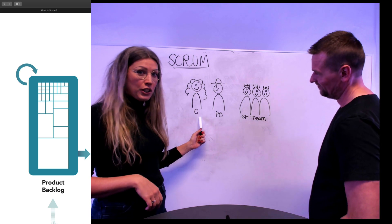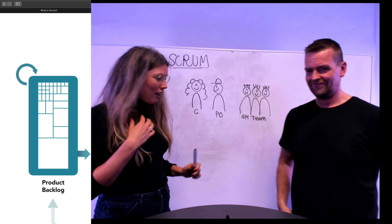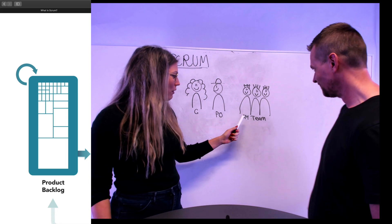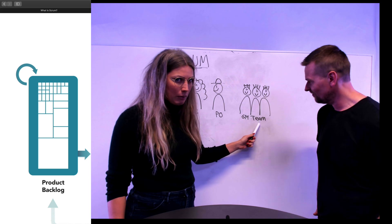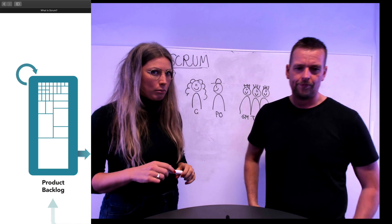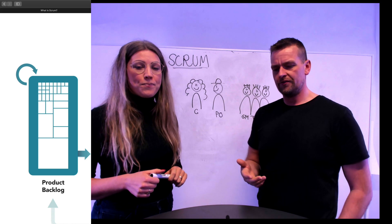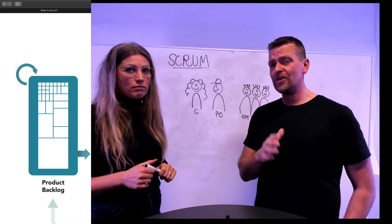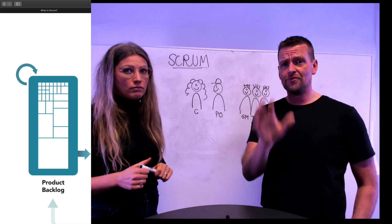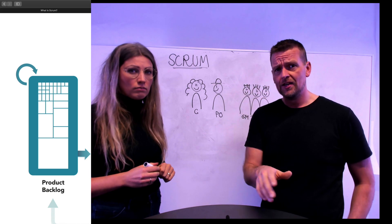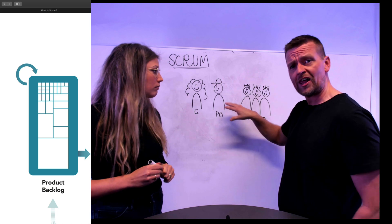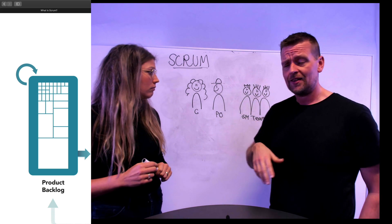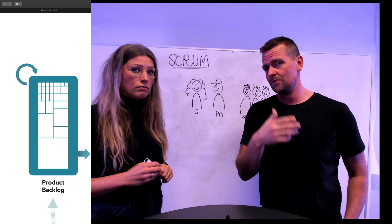So we have the customer here — that's me today. We have the product owner — that's you. And then we have the Scrum Master and the Scrum Team. Those are the roles in Scrum. Just before we get started with the interview, I want to talk a little about who normally talks to a customer. It really depends on the software team and the company. Sometimes people have multiple hats — the Scrum Master is also the product owner who's also part of the team. That's not something Scrum encourages, but it happens.